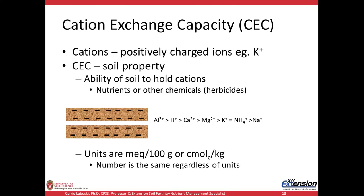Now we'll move on to cation exchange capacity. Cations are positively charged ions — for example, potassium, hydrogen, calcium — they're all positively charged. The cation exchange capacity is a property of the soil; a basic way to think about it is the soil's ability to hold cations. These cations can be nutrients, which we typically think about, but we also have to keep in mind that other chemicals might be cations as well, for example herbicides. This diagram shows clay layers in the soil where the black represents negative charge — through the process of isomorphic substitution, clays develop negative charges, and because they have a net negative charge, cations will be held onto the surface of the clay.